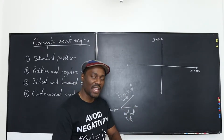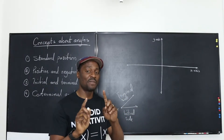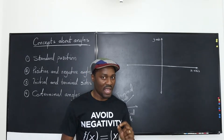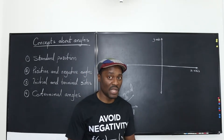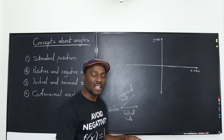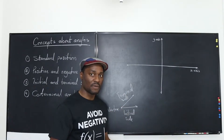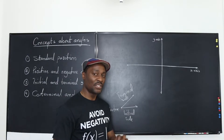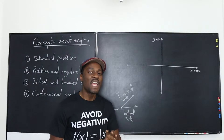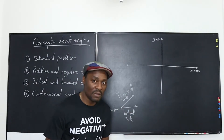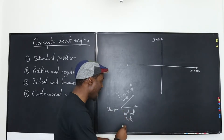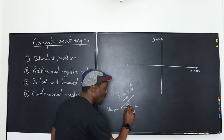In between the initial side and the terminal side is where you find the angle. The angle is just a measure of rotation. If this thing goes all the way and comes back to where it started, it's said to have gone through a full revolution — turning about the vertex through a full revolution. But if it does not complete the revolution, we just want to say how much of that revolution did it complete. And that's the essence of this thing we call an angle.